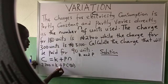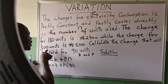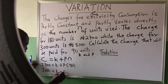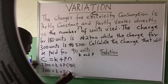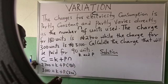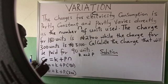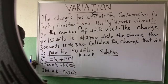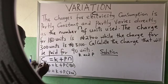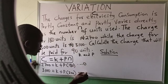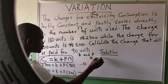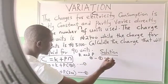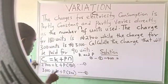That means equation 1 is 2700 = K + 180P, and equation 2 is 3100 = K + 300P. You need to find K and P. Solving them simultaneously using elimination: equation 1 minus equation 2, so that K and K cancel out. K will go.